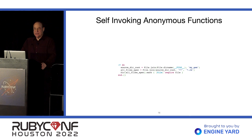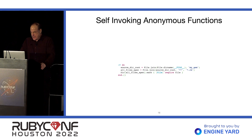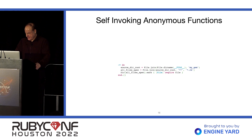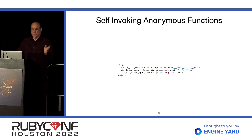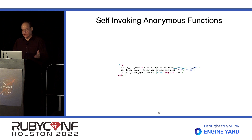Self-invoking anonymous functions — it's a fancy name for something that calls itself and is not named. We have three lines of code enclosed in a Lambda. Why would we want to do that? Well, once in a while it comes in handy for hiding the local variable names from the outer scope. When I worked with CoffeeScript a few years ago, they recommended doing this for that very reason.